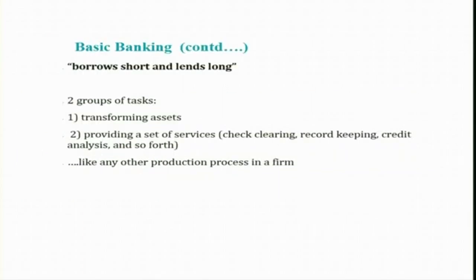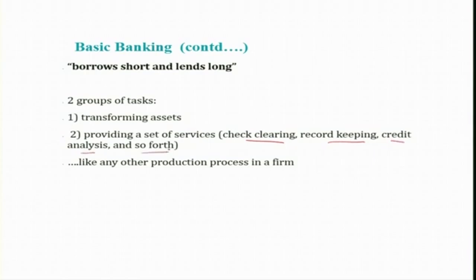In this process, a bank engages in an activity called borrowing short and lending long. Borrowing short means accepting deposits — the maximum expiry date, the time deposit, may be for one year — but banks lend for the long term, for five years, ten years, and so on. To summarize: a bank mainly performs two groups of tasks — one is transforming assets, as we just discussed, and the second is providing a set of services including check clearing, record keeping, and credit analysis. In this way, a bank is also like any other production process.